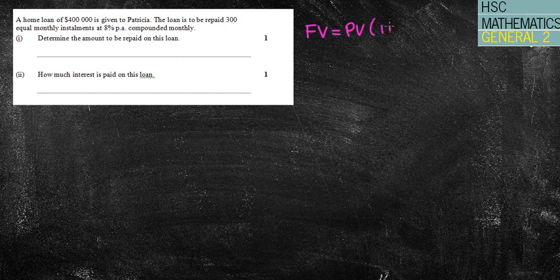Well, compounded monthly, we've got my future value equals my present value times (1 + r)^n. But once again, you could have simply used the compound interest formula A = P(1 + r)^n. They are the same formula.